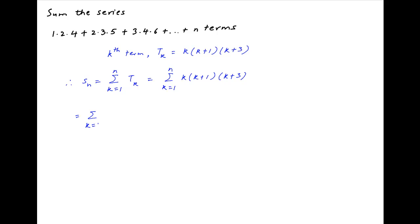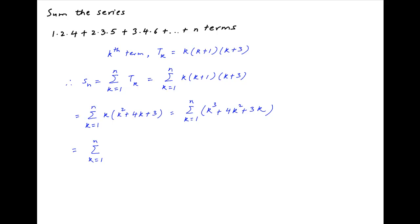This is equal to the summation of k times (k² + 4k + 3), which is equal to the summation of (k³ + 4k² + 3k), where k goes from 1 to n. This is equal to the summation of k³ plus 4 times the summation of k² plus 3 times the summation of k, where k goes from 1 to n.